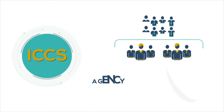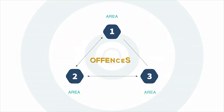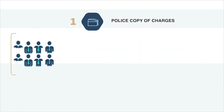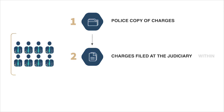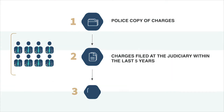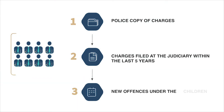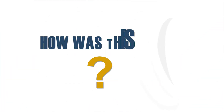Using the ICCS, the team of agency representatives was able to uniformly categorize offenses drawn from three areas. One, the police copy of charges. Two, charges filed at the judiciary within the last five years. And three, new offenses under the Children Act 2012.